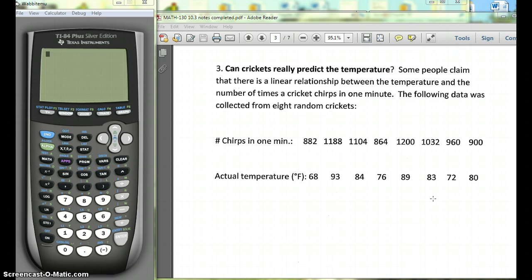Just like we've done in previous sections, to put this in we're going to hit stat, edit, and we're going to put the chirps per minute in L1. Remember if you need to erase this, you go up to the top, hit clear and enter. And L2, we'll clear that one too.